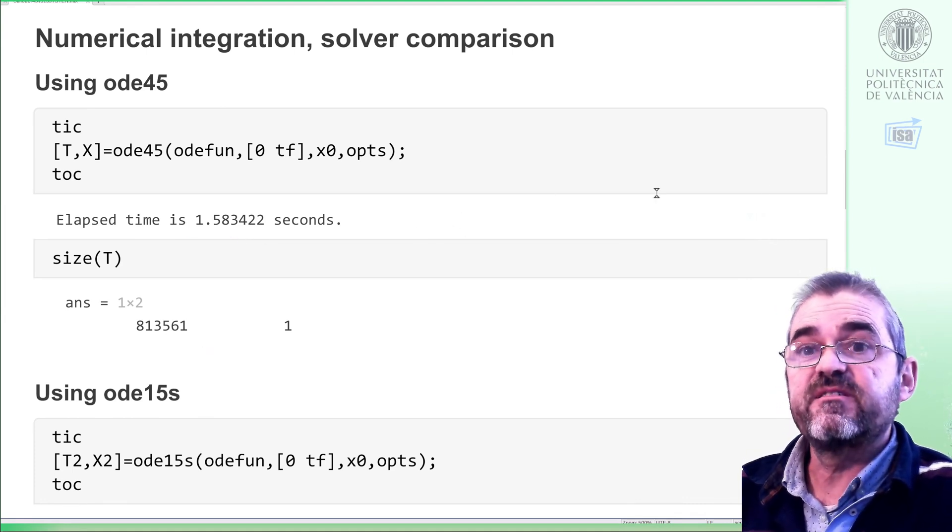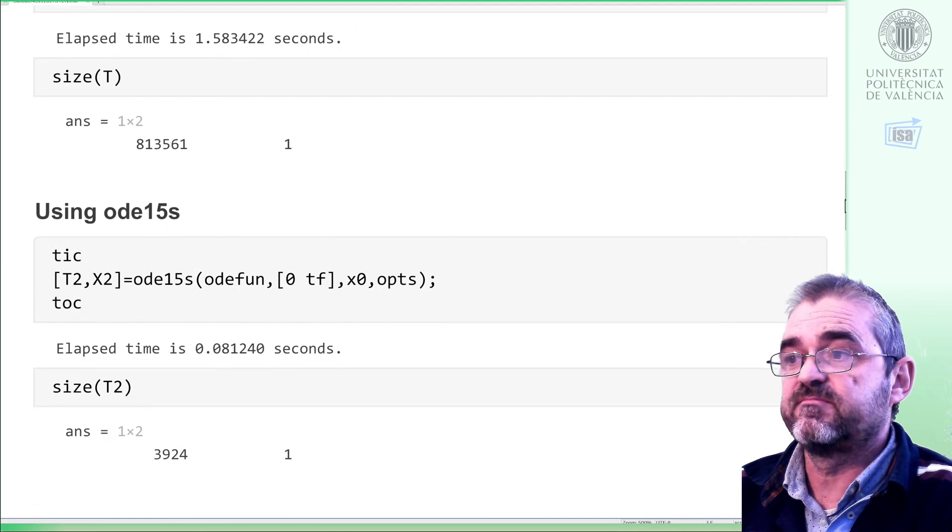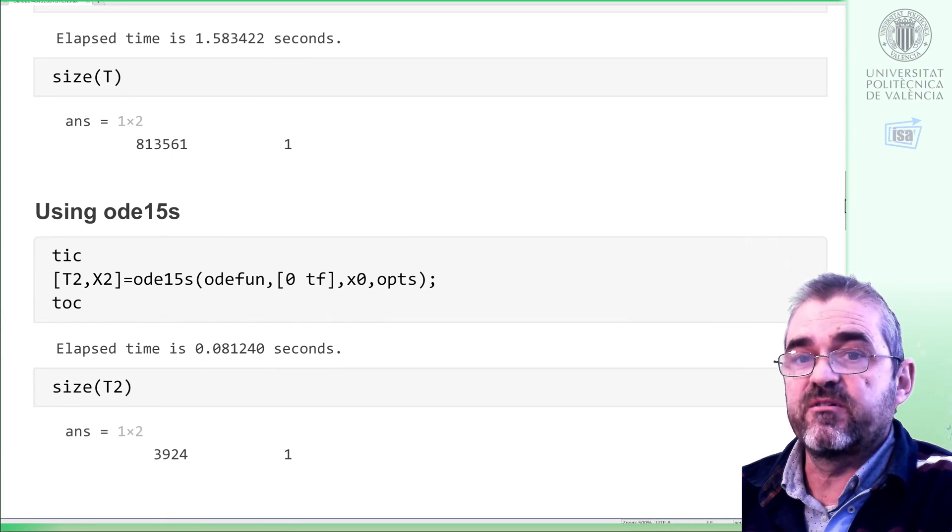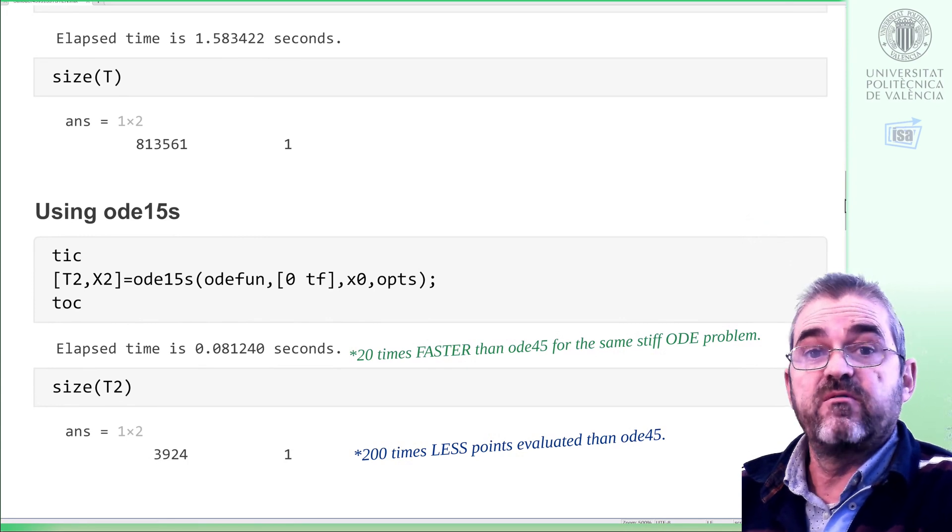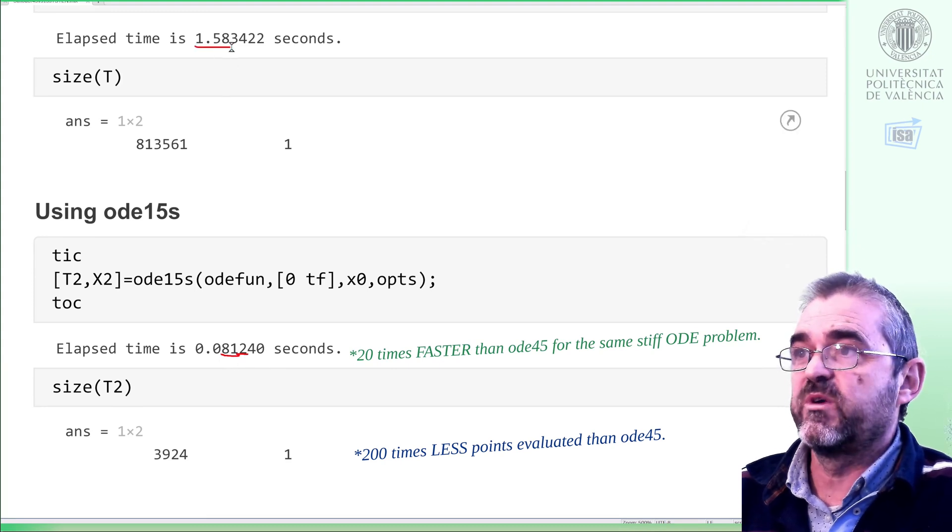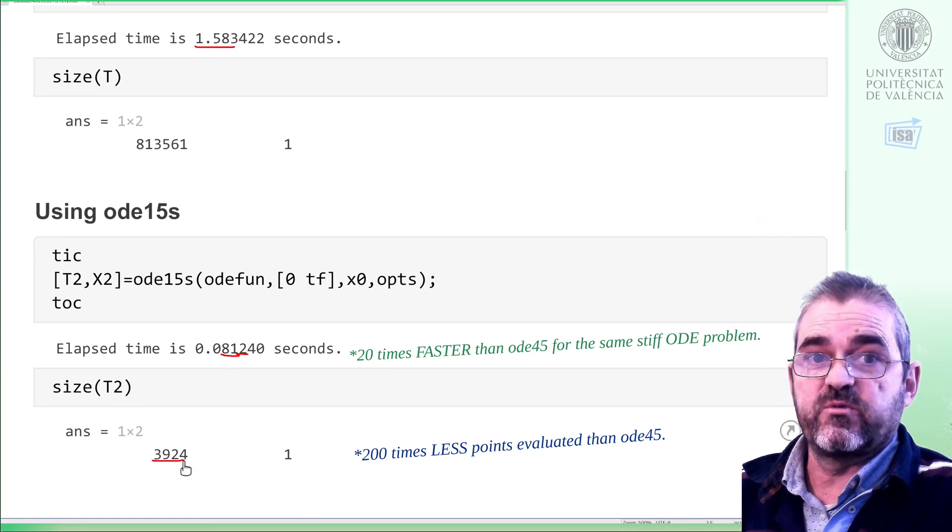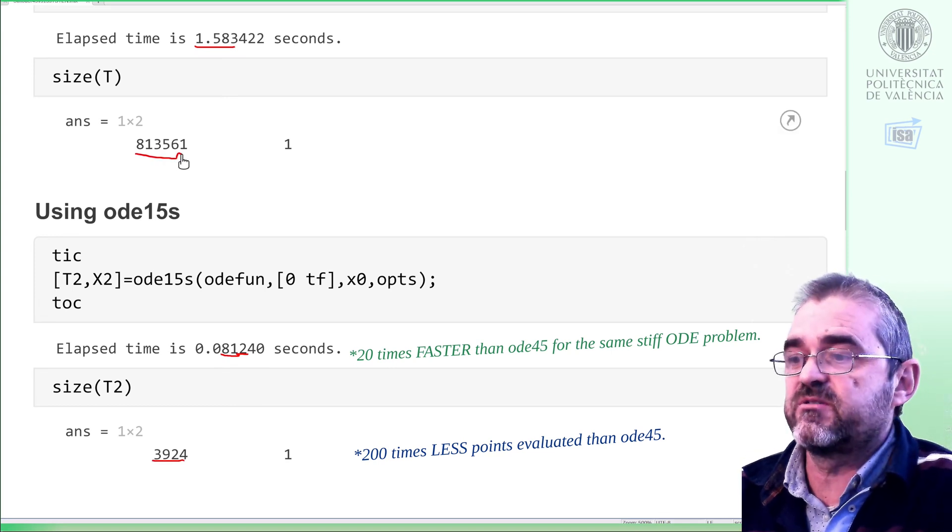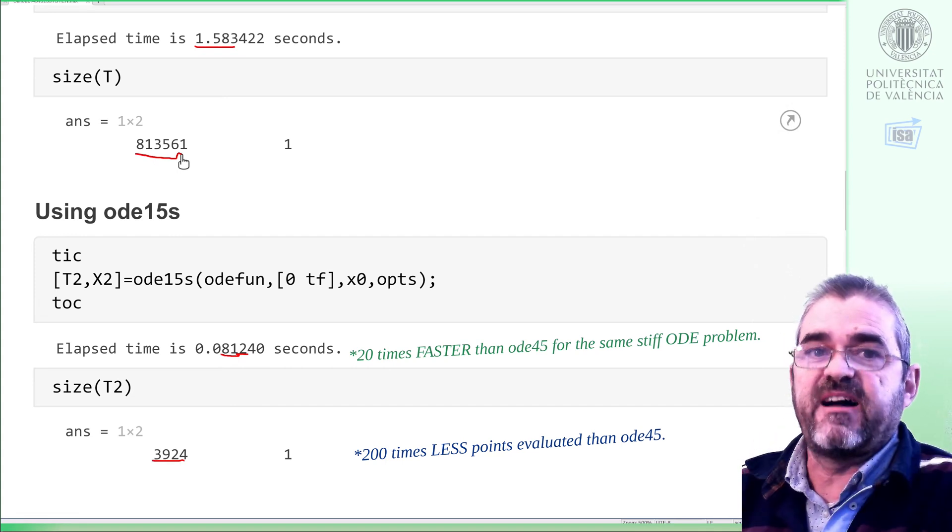However, the ODE solver for stiff systems, bingo, it took basically the same amount of time than in the previous case. I mean, depending on your computer and on random load of the computer, it takes more or less. But in this case, it took 81 milliseconds and 4000 points. So if we compare 81 milliseconds with 1600 milliseconds, it's kind of an abysmal difference. That was regarding time requirements. Regarding memory requirements to store the result of the simulation, from 4000 to 800,000, it's also a vast difference.